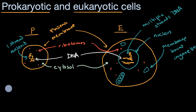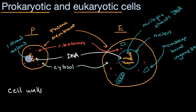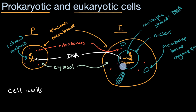You'll also sometimes hear people talk about cell walls in the context of prokaryotic cells. Prokaryotic cells generally have cell walls that give them a little more rigidity and strength on the outside. Eukaryotic cells can have cell walls — many plant cells do — but in many cases they don't. For example, animal cells don't have cell walls.